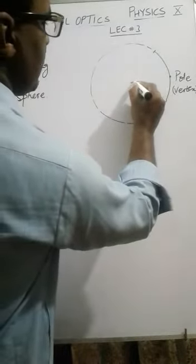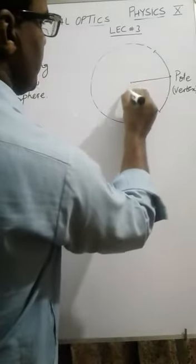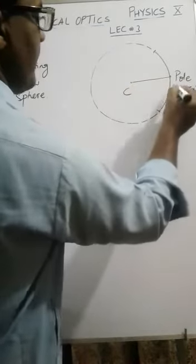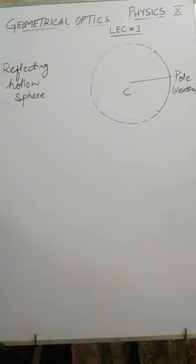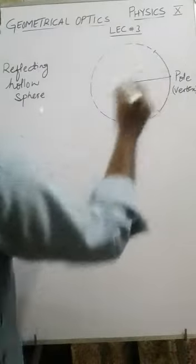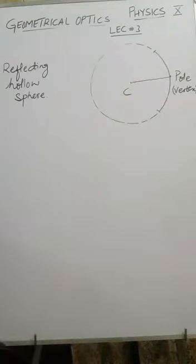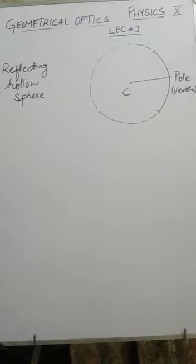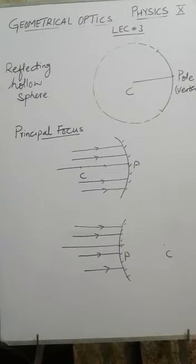The line joining the center of curvature and the pole is known as the principal axis. The distance between the pole and the center of curvature is known as the radius of curvature.